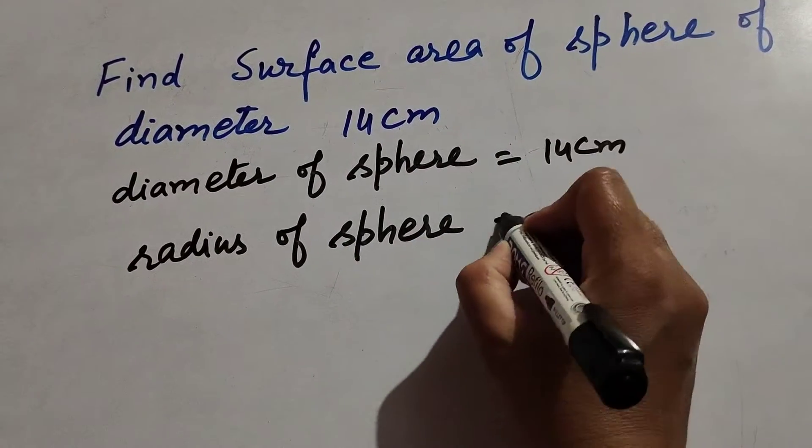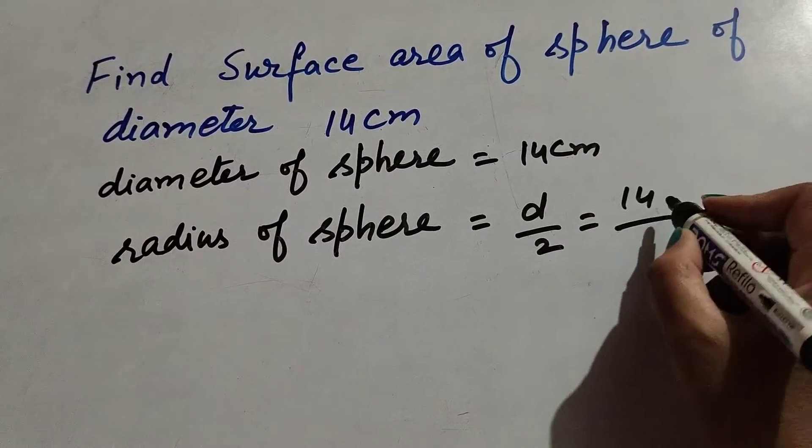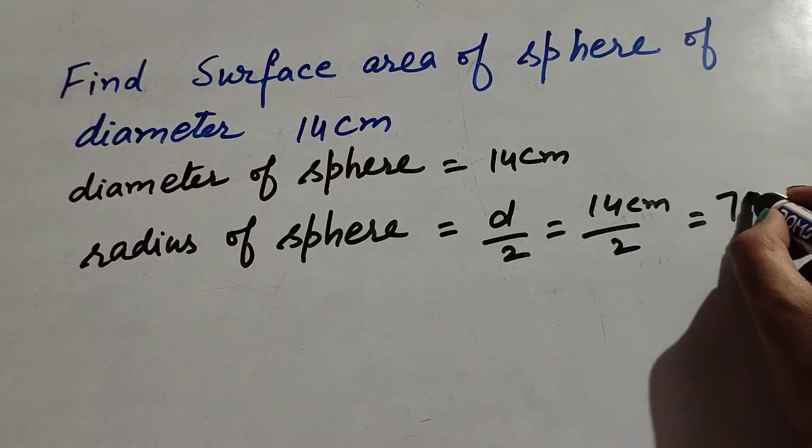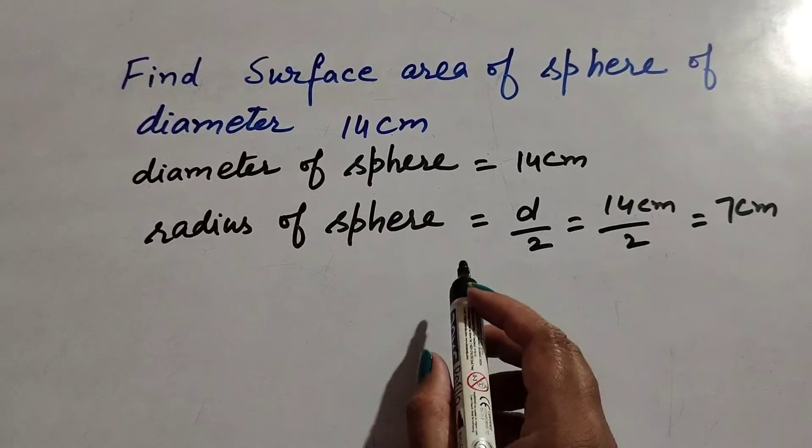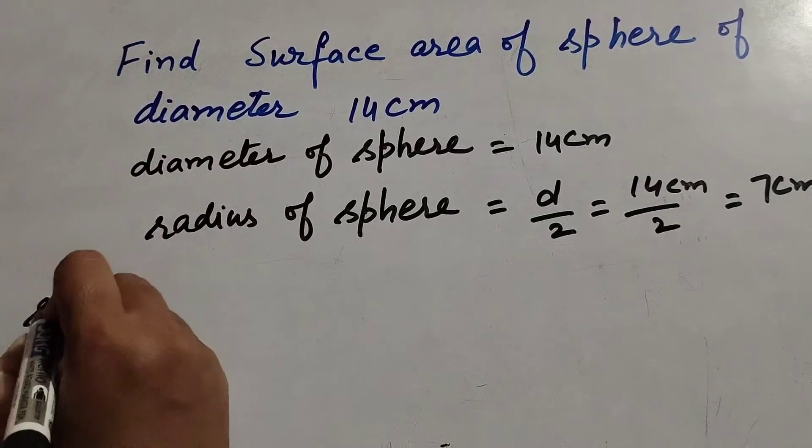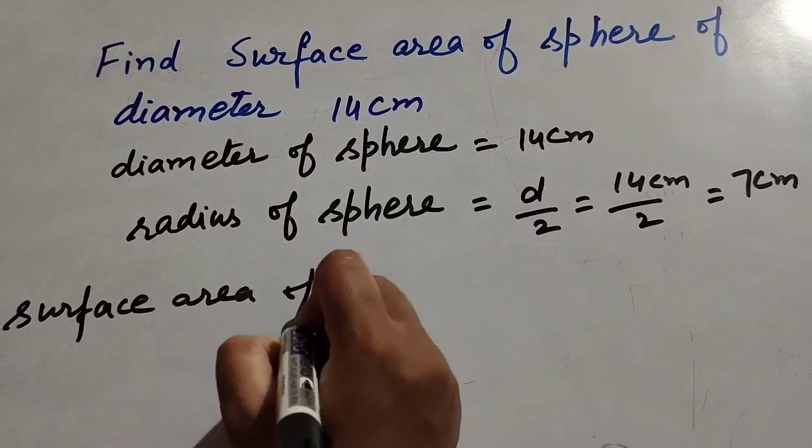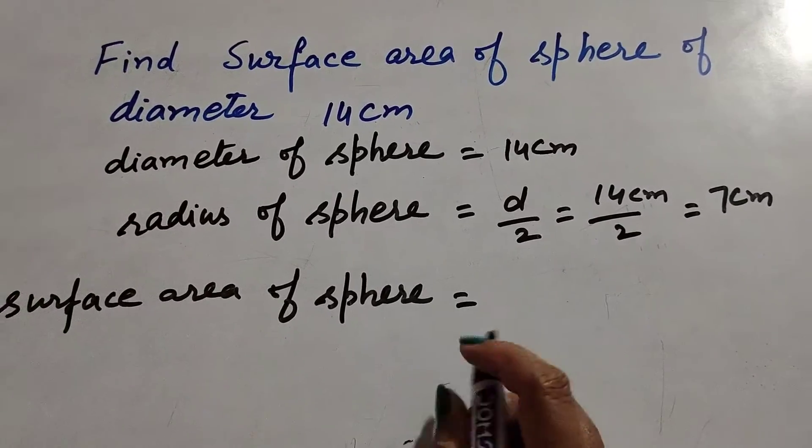Radius of sphere is diameter divided by 2. Diameter is 14 centimeter, it is divided by 2, and we get radius of sphere is 7 centimeter. Now we find the surface area of sphere.